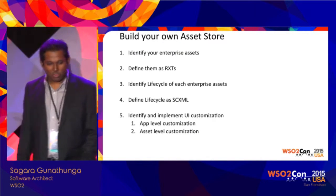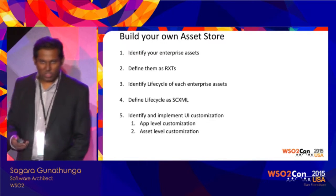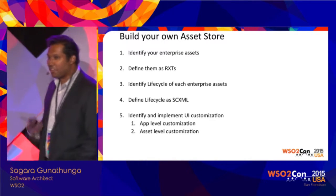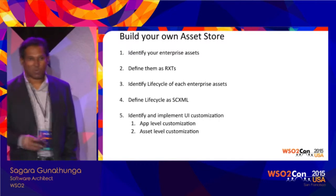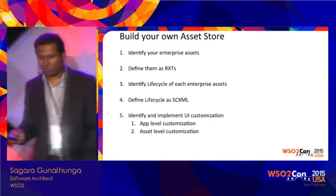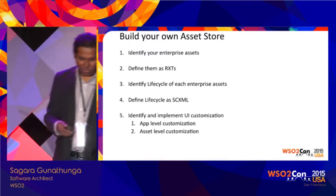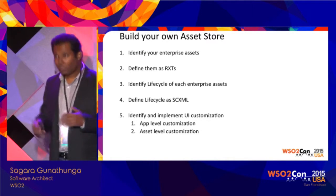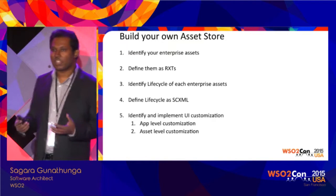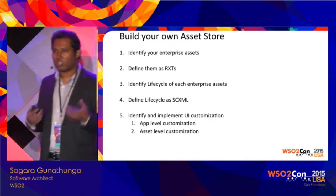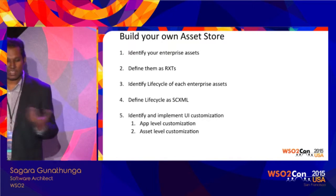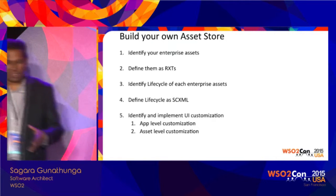So the question is: how do you build your own asset store? First, identify what your digital assets are — it could be a bookstore or a government use case. List all the attributes of each asset and define them using an RXT. Our documentation has a comprehensive tutorial on how to write new assets. Then define the lifecycle of your asset using SCXML. Finally, think about what app extensions and asset extensions you need and implement them through JavaScript. Basically, this is a five-step task.